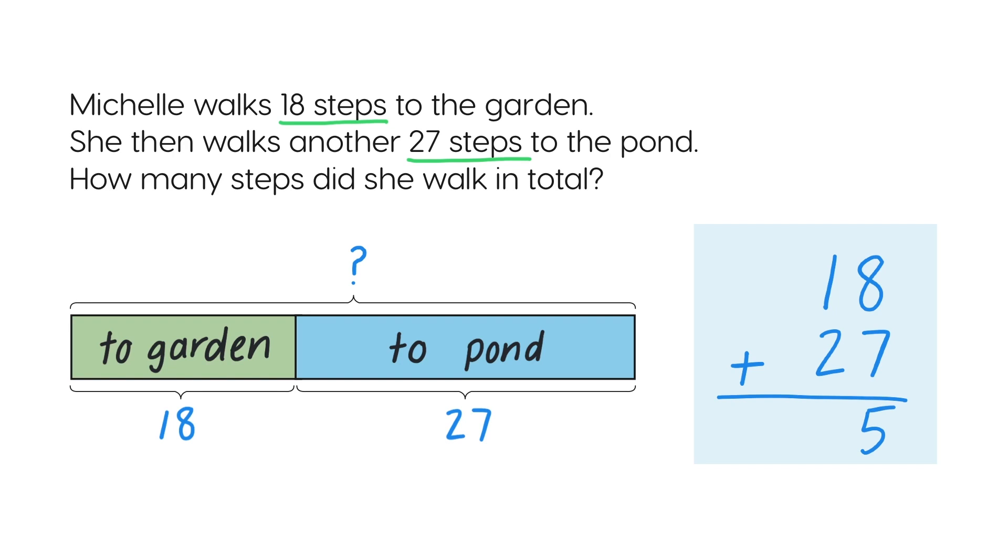Write the five ones here and the one ten here. Now add the tens. One ten, add two tens, add one ten, equals four tens.